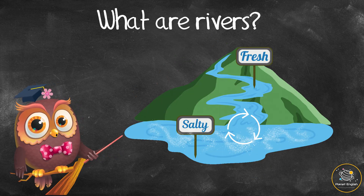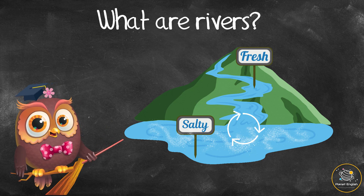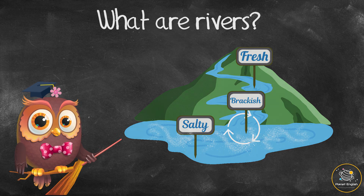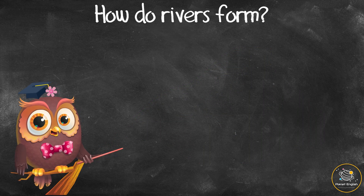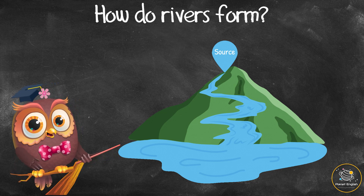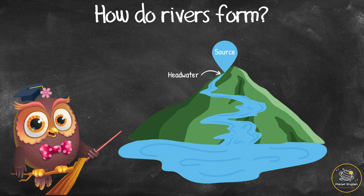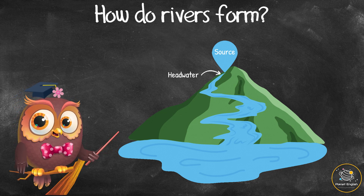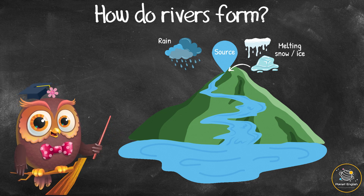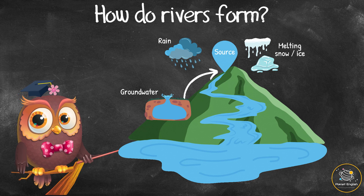Sometimes fresh river water mixes with salty sea water near the river mouth. This mixture of fresh and salty water is called brackish water. How do rivers form? All rivers have a starting point or source where the water begins to flow as a tiny trickle. This source is called a headwater. The headwater can come from rainfall, melting snow and ice, or from groundwater, which is water that comes from underground through a spring.